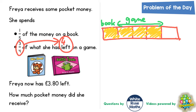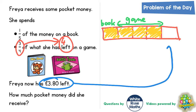She's now only got one piece left, and it is telling us that she has £3.80 left. This must be the price of this one piece. It is asking us how much pocket money did she receive at the start. This one piece is one fifth of the original bar, so if that one fifth is worth £3.80, all of the other fifths must also be worth £3.80.